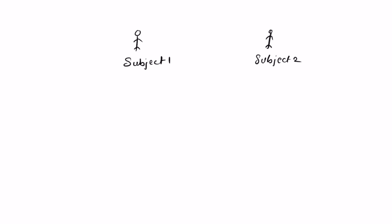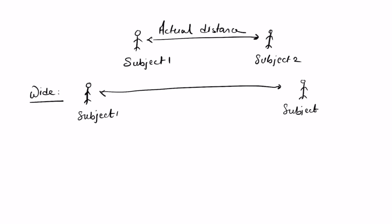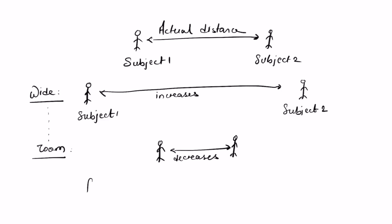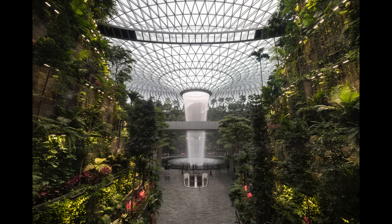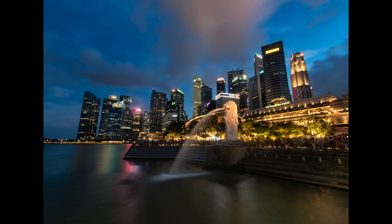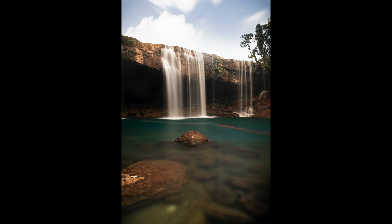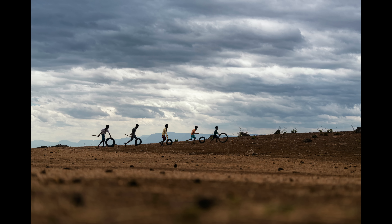Focal length actually affects the image in a very different way — it changes the compression you have in the image. Compression is how close or how far the subject looks. As you zoom in and increase the focal length, the compression increases. Two subjects, if they are at a distance, they look closer if you zoom in. Similarly, if you are using a wider focal length, the distance between two subjects actually increases. Depending on the compression you want, you have to decide the focal length. If you are a beginner, understanding compression and perspective will be difficult, but as you grow as a photographer and practice, you will get the knack of it.